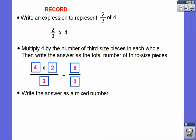Now write eight-thirds as a mixed number. Eight-thirds is three-thirds plus three-thirds plus two-thirds. Or: three goes into eight two times with two left over, so the answer is two and two-thirds. One plus one is two wholes, and that's two-thirds — two and two-thirds pounds.